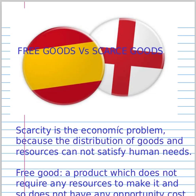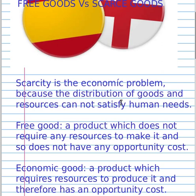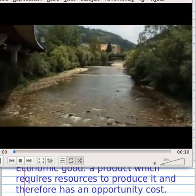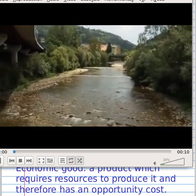For this reason we can differentiate two types of goods. The first type are free goods: a product which does not require any resources to make it, and so does not have any opportunity cost. For example, you can see this video, and we can talk about river water, air, forest, and national resources.